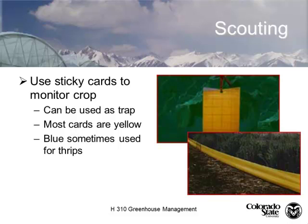If you're fly fishing, what's the first thing you do? You look to see what's hatching — otherwise you're not going to catch anything. Most cards are yellow. Blue is specific for western flower thrips if you want to look just for thrips. I don't own a yellow shirt because I don't want to walk into a greenhouse and be the attractant. This yellow strip in the lower corner is being used as a trap — you'll often see these along the pad wall in a greenhouse. That's an effective trap; a little 3x5 card is not.